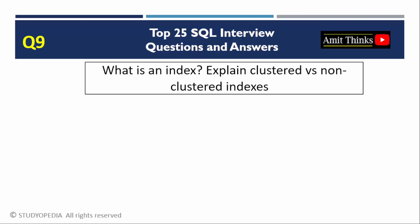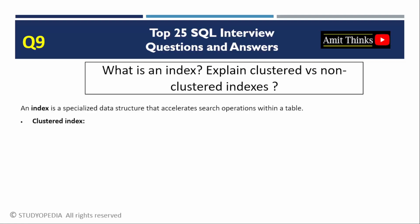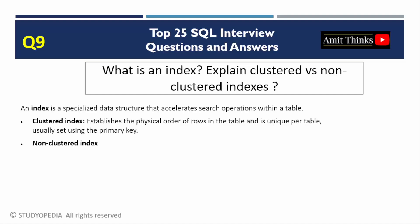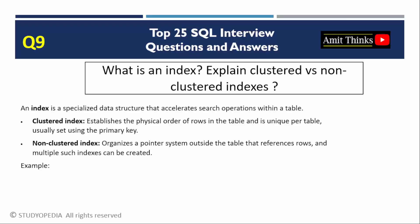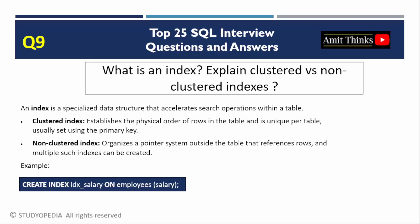Question 9: What is an index? Explain clustered versus non-clustered indexes. An index is a data structure that speeds up data retrieval by providing quick lookup paths. A clustered index determines the physical order of data in a table; each table can have only one clustered index (e.g., the primary key). A non-clustered index creates a separate structure pointing to data rows; multiple non-clustered indexes are allowed. Indexes improve read performance but slow down writes due to maintenance overhead.